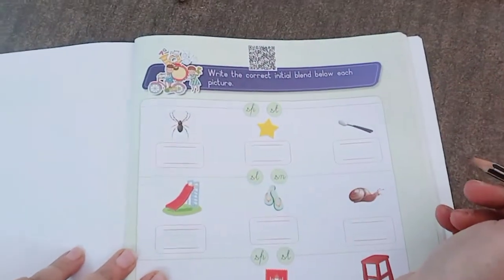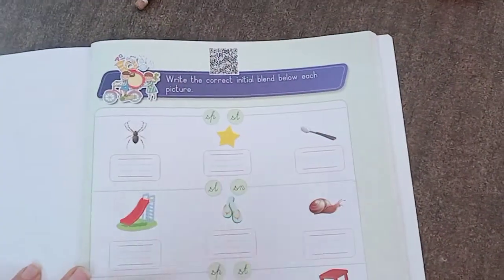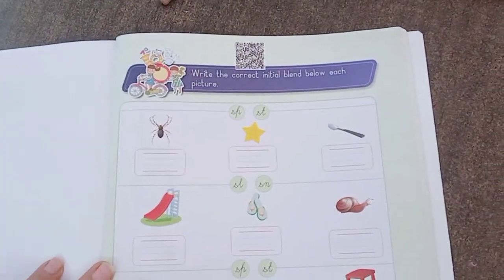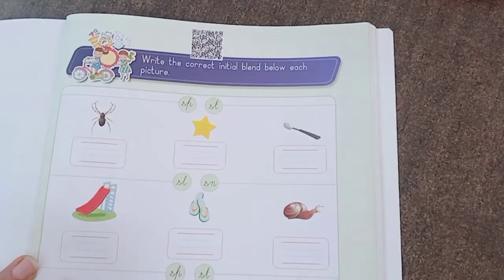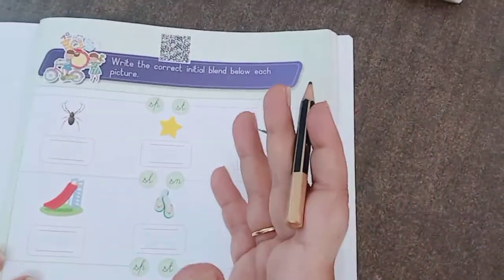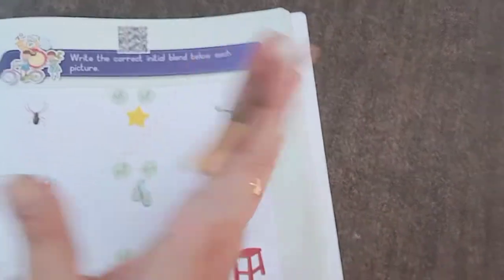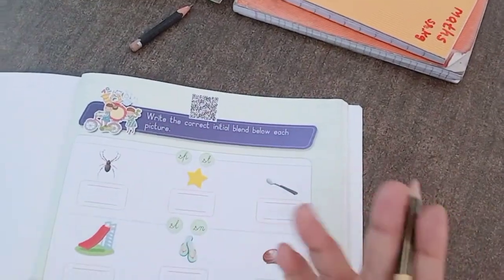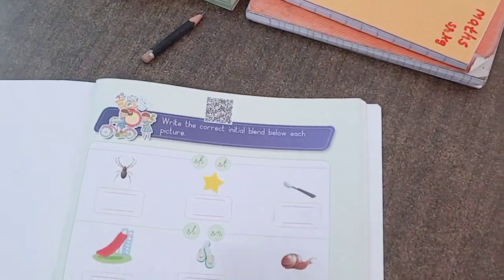In the worksheet, so kids, this is a worksheet that you have given in the center. There are so many blends. When we put together, we can hear two sounds of both letters. We can listen to both sounds.